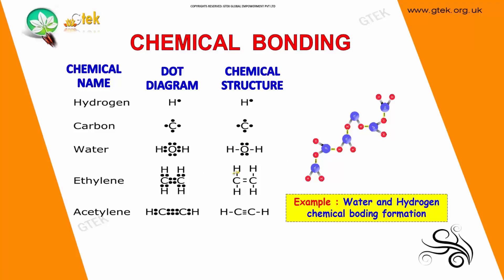Ethylene has the dot diagram and chemical structure as shown here. And acetylene — you have three bonds here. So for water and hydrogen, the chemical bonding is shown here.